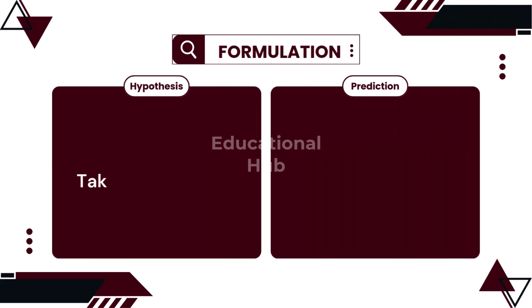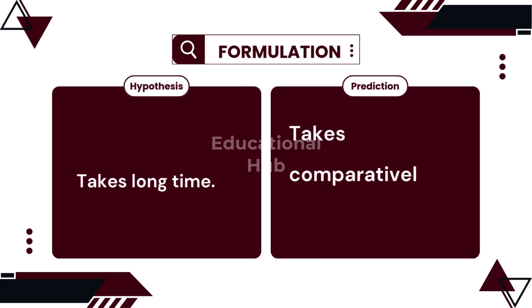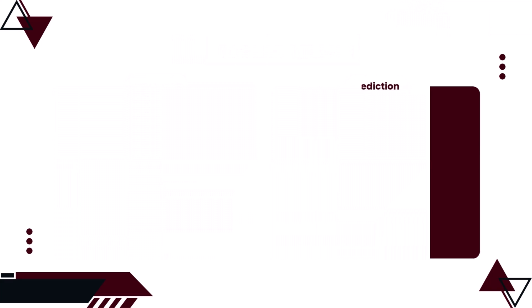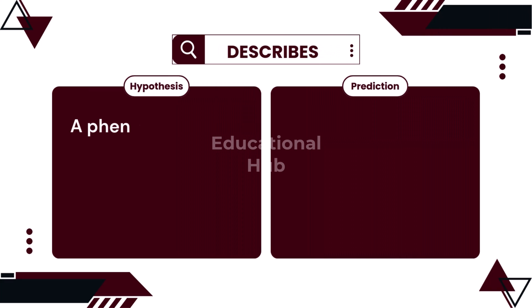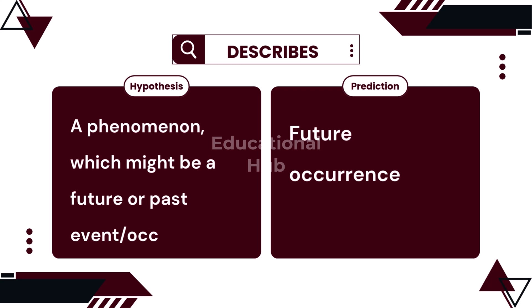6. Hypothesis formulation takes a long time. Conversely, making predictions about a future happening does not take much time. 7. Hypothesis defines a phenomenon which may be a future or a past event. Unlike prediction, which always anticipates about happening or non-happening of a certain event in future.